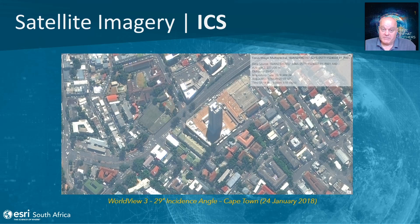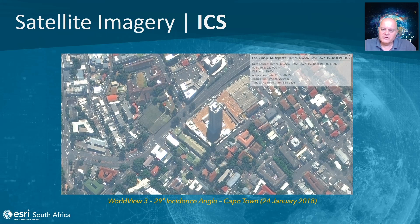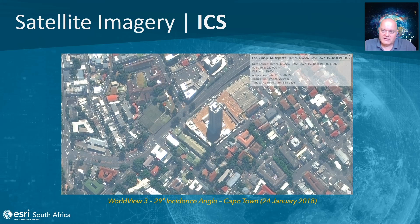Finally, regarding oblique or high-incidence angle satellite imagery, we use the direct read capability to understand how the image was taken, the typical incidence angle, and where the satellite was when it took the image. This example shows Cape Town, just south of Parliament, where we can look at the Gardens Shopping Centre, measure the height of the building, see the construction method, and view what the building looks like from the side — using a concept called ICS, or Image Coordinate Space.